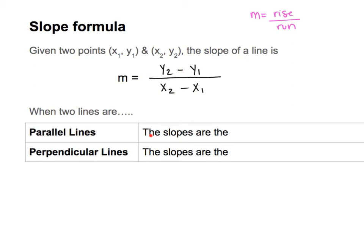For parallel lines, when two lines are parallel, the slope is the same. When two lines are perpendicular, the slope needs to be opposite signs — one negative, one positive — and they need to be reciprocal, meaning the fraction is flipped. Both things have to happen: opposite signs and reciprocal.